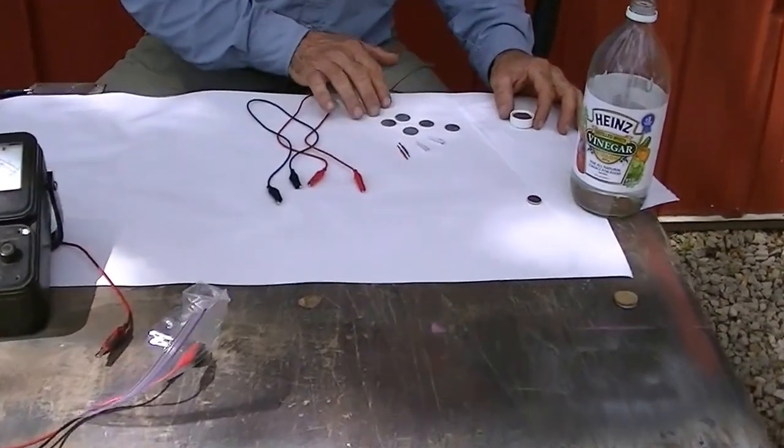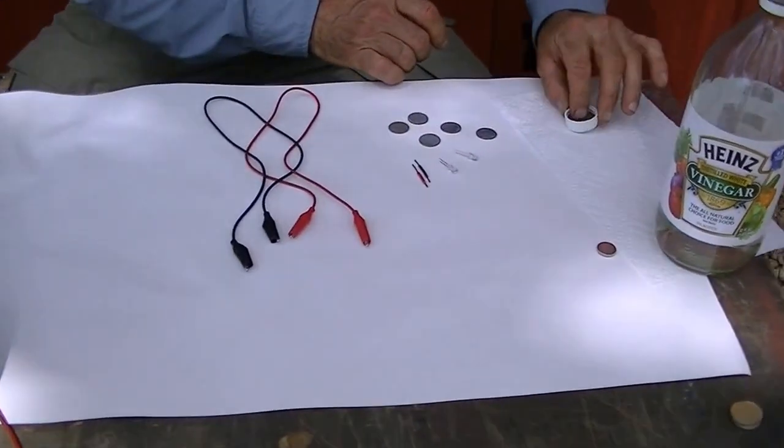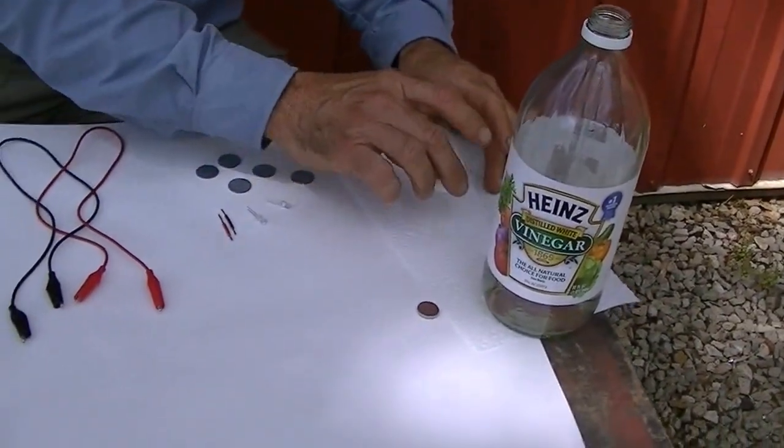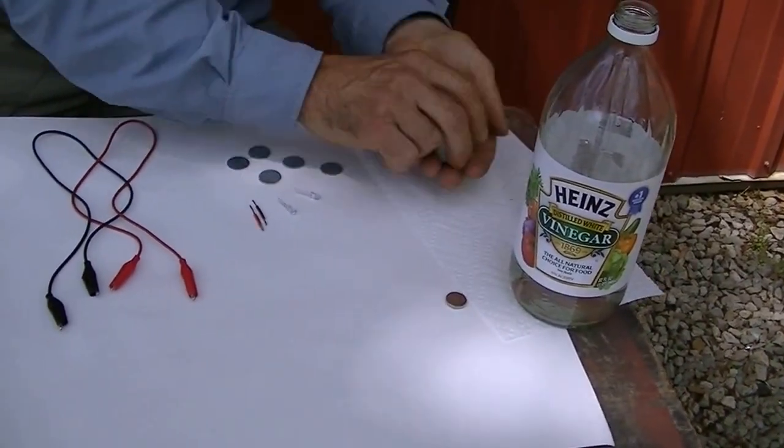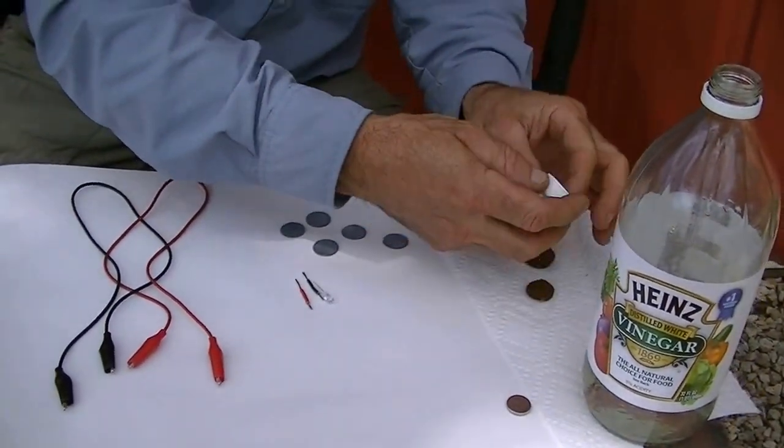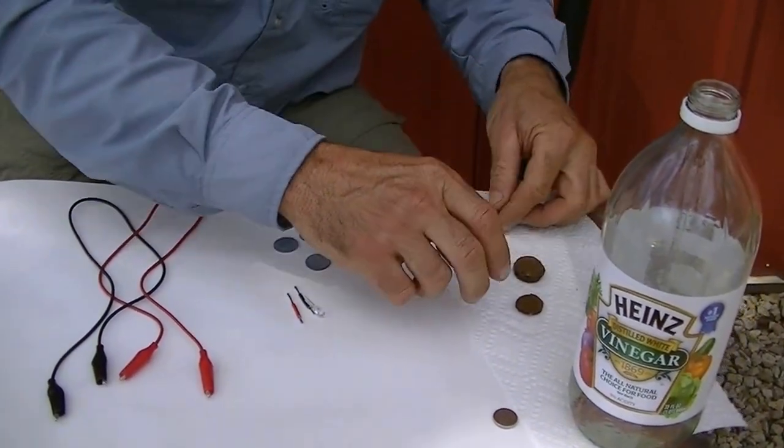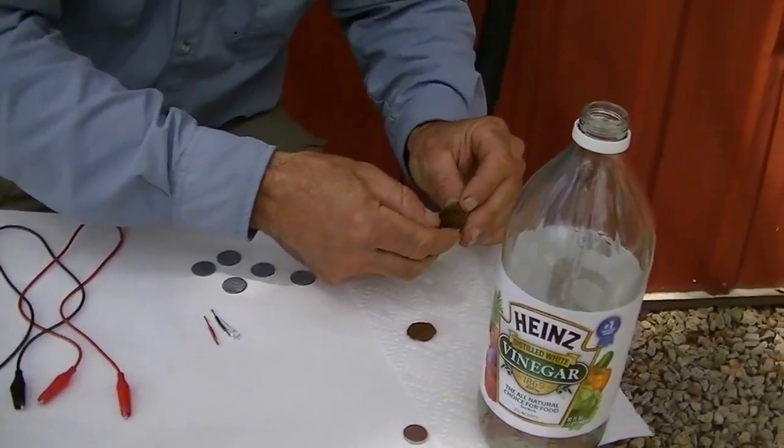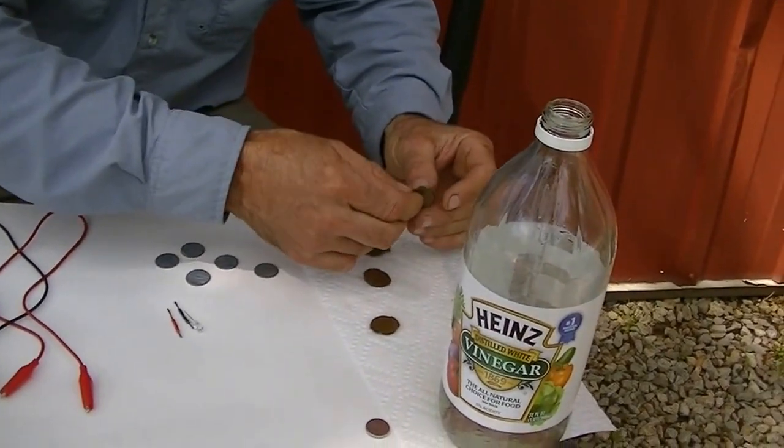All right we got our five pennies and the cardboard is soaked for about a minute in the vinegar. Dump out the excess and we'll separate each piece. You kind of want to just dry it a little bit. The vinegar is simply an acid. You could use lemon juice as well.